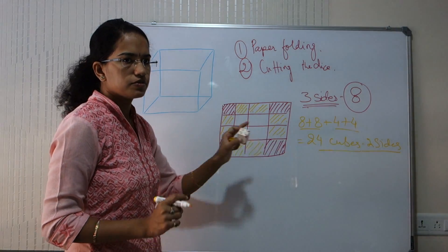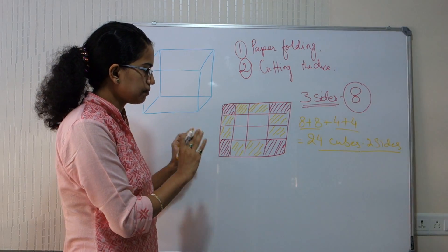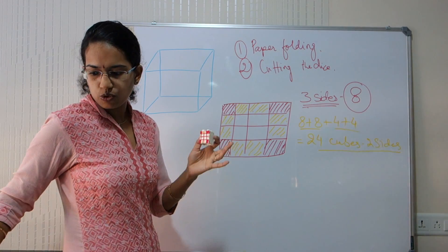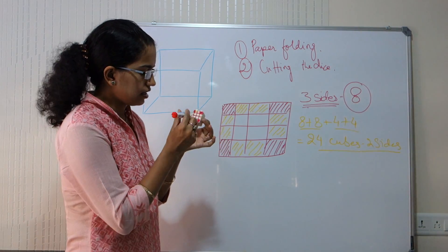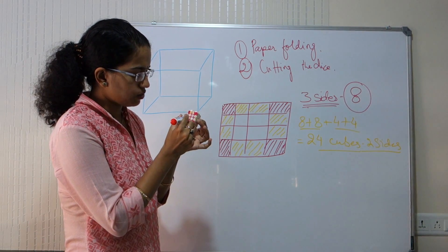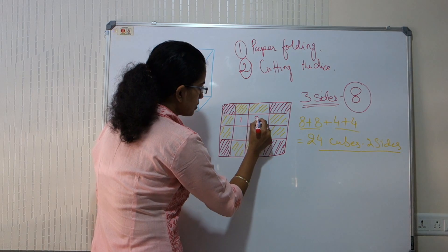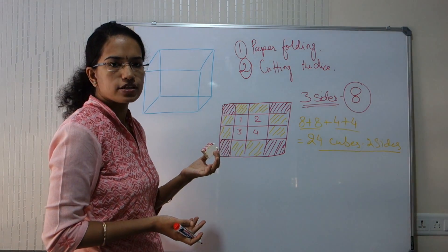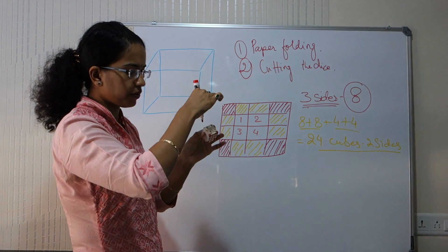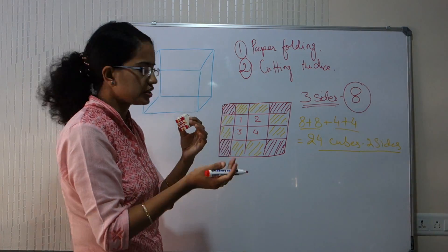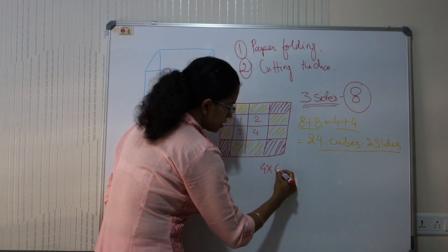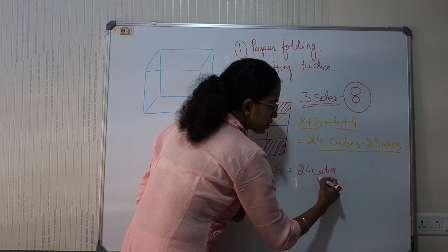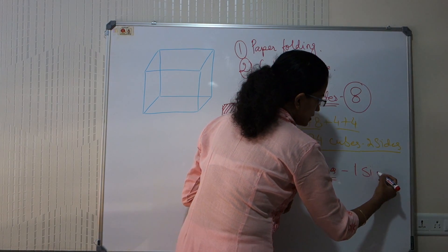There are 24 cubes which will have 2 sides painted. Now, how many cubes will have 1 side painted? In the same cube, if I mark these with red — 1, 2, 3, and 4 with red — that's 4 on each side. So with 6 faces and 4 on each side, it would be 4 into 6, which is again 24 cubes. So 24 cubes would have 1 side painted.